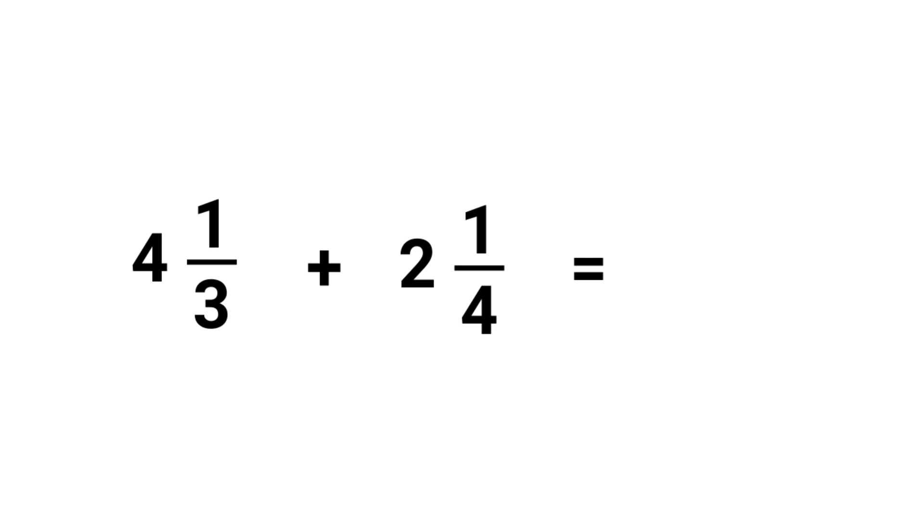We have 4 1/3 and 2 1/4. The first thing we are going to do is get the denominator by simply multiplying these numbers. So 3 times 4 is 12.